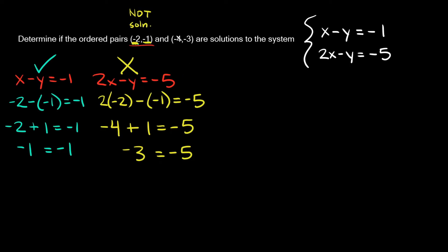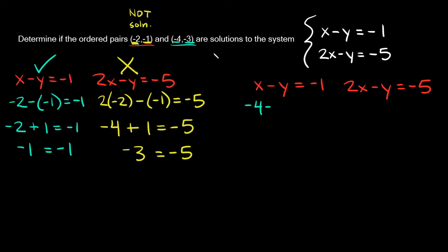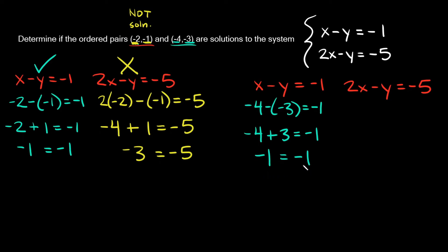So now let's check this other ordered pair and see if this one is a solution to this system. Rewriting the two equations: x minus y is equal to negative 1 and 2x minus y is equal to negative 5. This is our x, this is our y. So let's plug in negative 4 for x, and then minus our y which is negative 3, and that's going to be equal to negative 1. So then we have negative 4 minus a negative number, which is the same thing as adding, so plus 3 equals negative 1. Negative 4 plus 3 is equal to negative 1, and we're setting that equal to this negative 1. So we got a true statement — negative 1 is equal to negative 1. This ordered pair is a solution to this first equation.